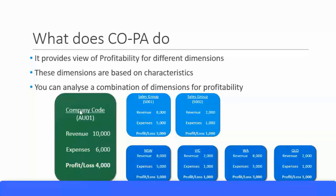For example, for a particular company code, you have revenues of $10,000 and expenses of $6,000, giving a profit of $4,000. At the company code or financial accounting level, this is sufficient. However, at the management accounting level, if you want to further analyze how different segments are performing — wholesale vs. retail, different states, countries, or industries — then you need to have COPA implemented.